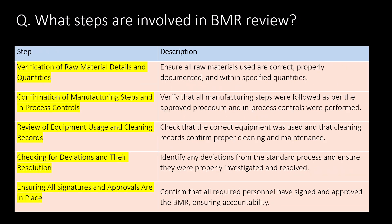Very important question: what steps are involved in BMR review? The key steps involved in BMR review are: first, verification of raw material details and quantities; second, confirmation of manufacturing steps and in-process controls; third, review of equipment usage and cleaning records; fourth, checking of deviations and their resolutions; and fifth, ensuring all signatures and approvals are in place.